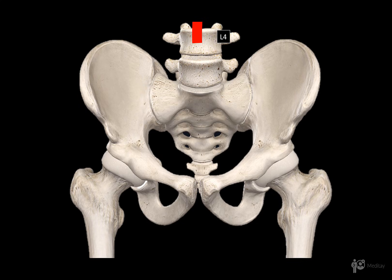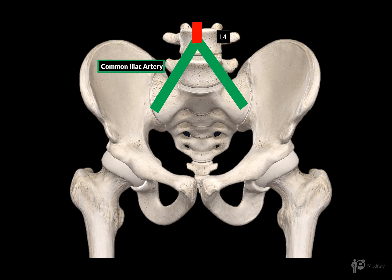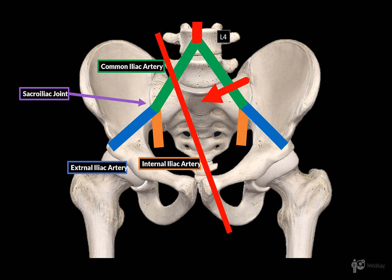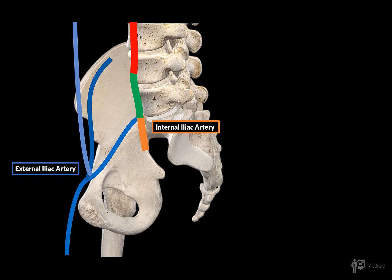As you know, the abdominal aorta will continue downwards to approximately the fourth lumbar vertebrae, and then it will divide into what is called the common iliac arteries. They will continue to approximately the sacroiliac joint, and then further divide into the external iliac and the internal iliac arteries. Now let's make a cross section and look at them both from this perspective to visualize them easier, and then from here we can finally focus on the internal iliac artery.